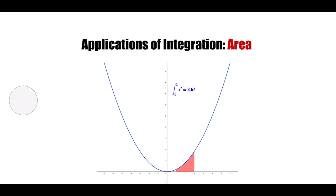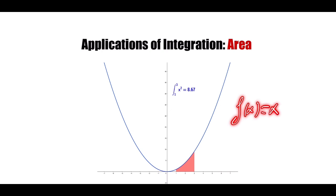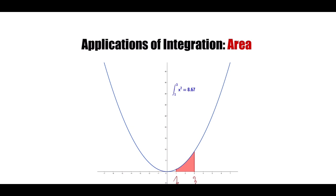Let's take this example: we have a function f(x) = x², and we want to calculate the area of the shape between x = 1 and x = 3. So we have the point one here and the point three here, and if we use a calculating machine we find the answer — but let's try to find it using algebra.